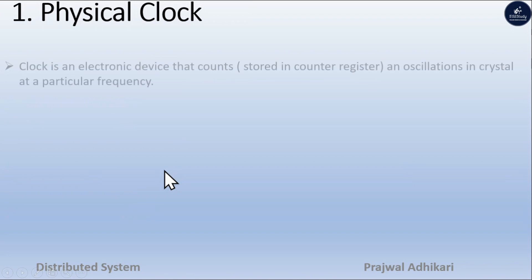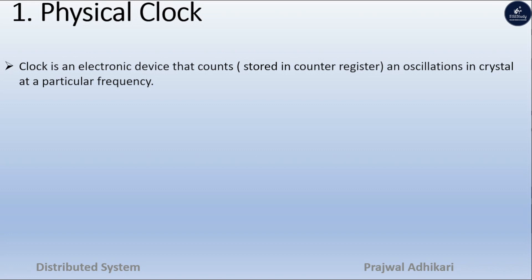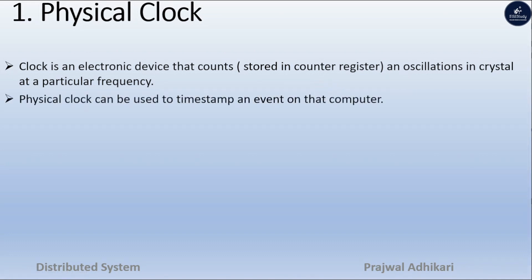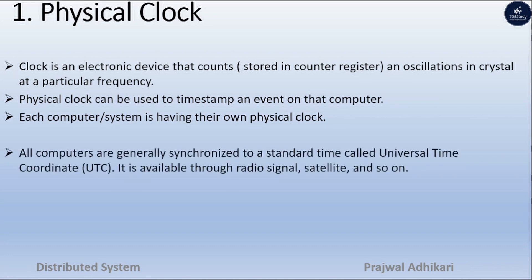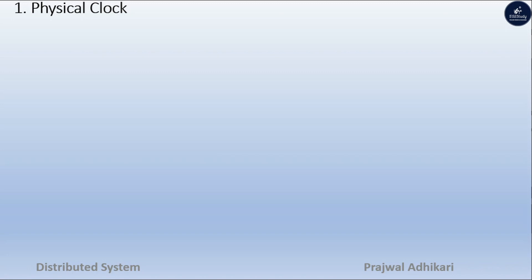So what is a physical clock? Basically, a clock is an electronic device that counts oscillations in a crystal at a particular frequency, stored in a counter register. A physical clock can be used to timestamp an event on a computer. Each computer or system has its own physical clock. All computers are generally synchronized to a standard time unit called Universal Time Coordinate (UTC), which is available through radio signals, satellites, and so on.